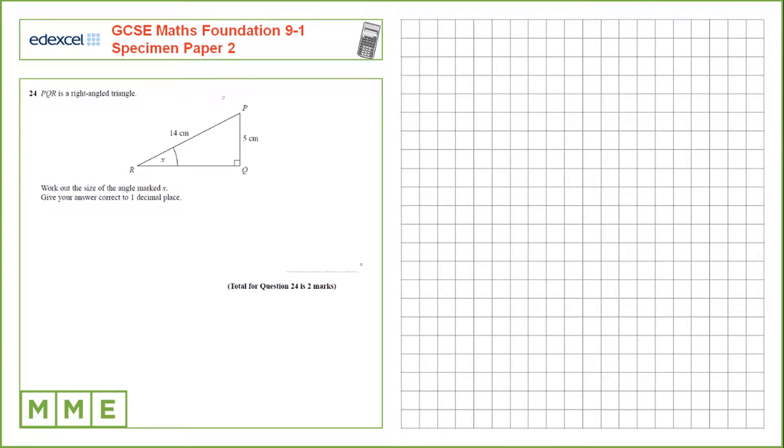Question 24. PQR is a right-angled triangle, and we need to work out the size of the angle marked x.